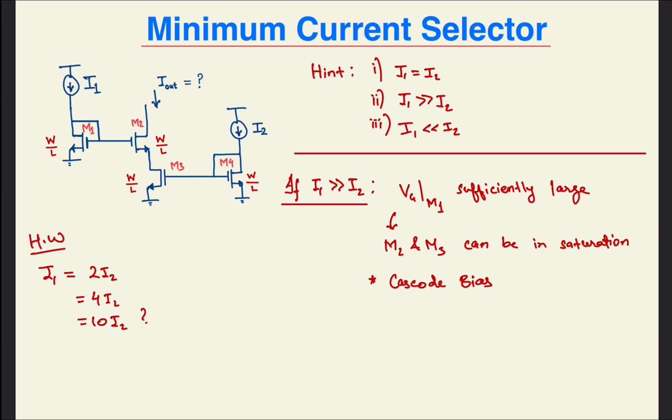As homework, you can even figure out how much I1 should be larger than I2 for both the transistors to be in saturation. I'll give you some options: I1 equal to 2I2, I1 equal to 4I2, and I1 equal to 10I2. For this, you can assume that the body effect is negligible and all the transistors are matched.